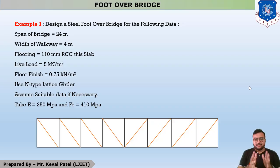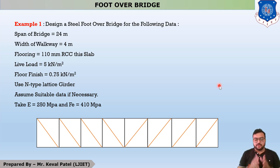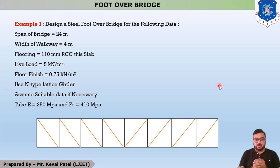Good morning students. This is the sixth lecture of our example number one, which is the design of a foot over bridge. In the last lecture we discussed about the design of the top chord member, and after that we will discuss about the forces on the bottom chord member.